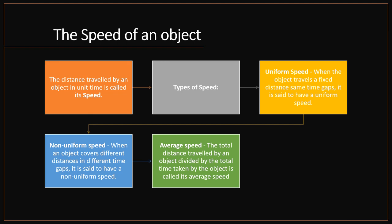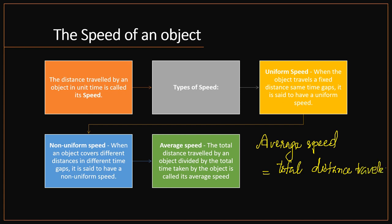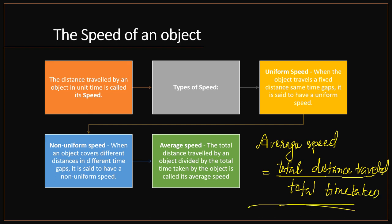Now the types of speed: uniform speed and non-uniform speed. There is also average speed. Average speed is the total distance traveled by an object divided by the total time taken. Average speed equals total distance traveled divided by total time taken.